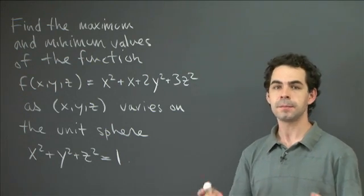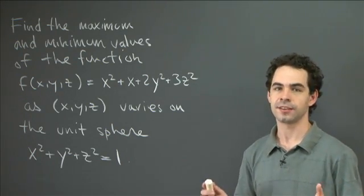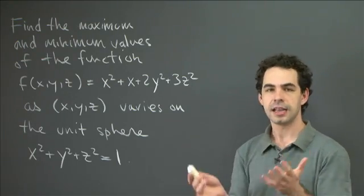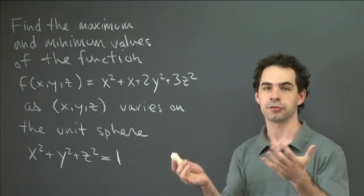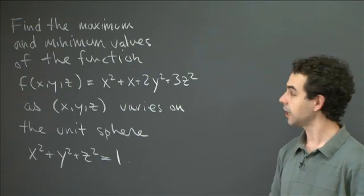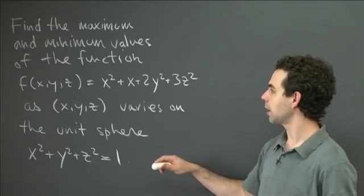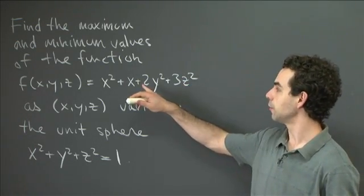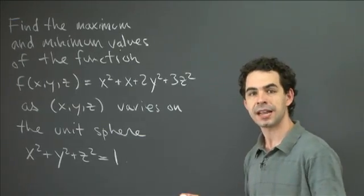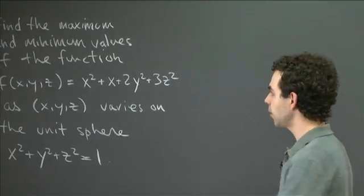Also, sometimes you have some boundary to your region and you have to check that as well. In this case, the sphere doesn't have a boundary, so we don't have any boundary conditions to check. So we're going to have a really straightforward problem to solve where we just have to look at the partial derivatives. So let's write down that system of equations that we have to solve.